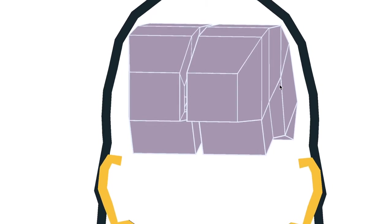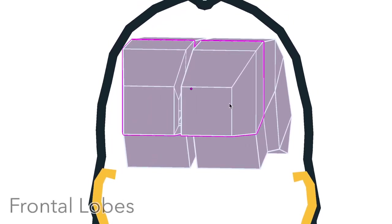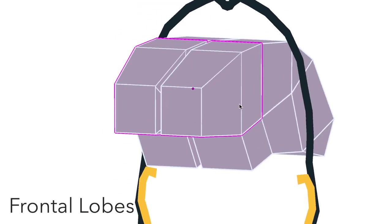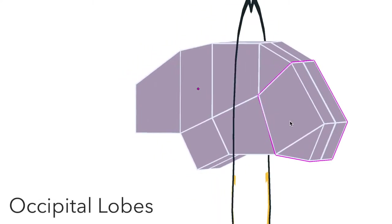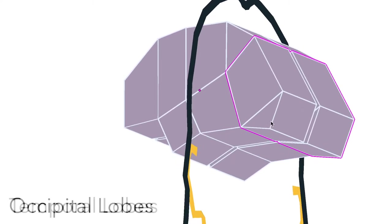And we divide the cortex into lobes. We have the frontal lobes, the parietal lobes, the occipital lobes and temporal lobes.